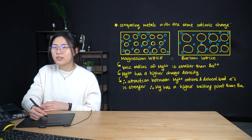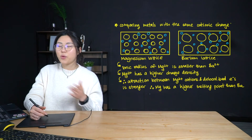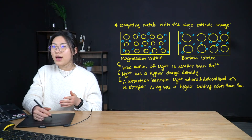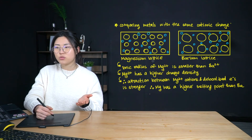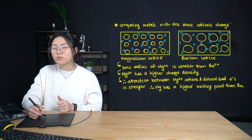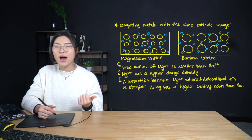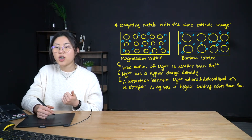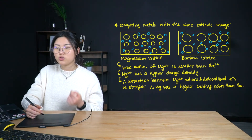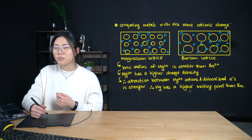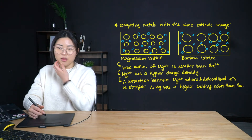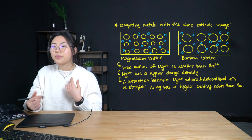Now let's compare metals with the same cationic charge. Magnesium has a 2+ charge and barium also has a 2+ charge. But the ionic radius of Mg²⁺ is a lot smaller than Ba²⁺. Magnesium 2+ therefore has a higher charge density than barium, because barium is a lot larger. Therefore, the attraction between Mg²⁺ cations and delocalized electrons is stronger, and magnesium has a higher melting point than barium. As you can see in the diagram, the magnesium structure is a lot more compact than barium.